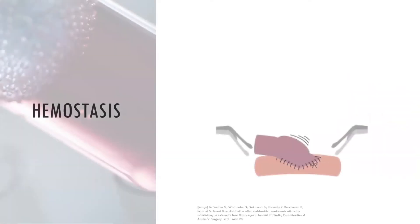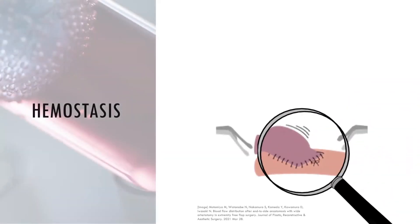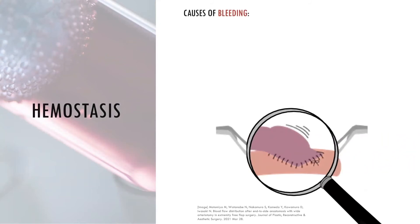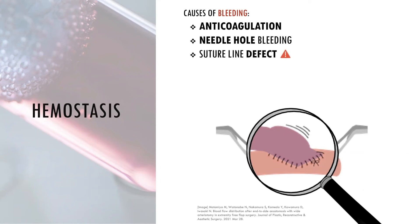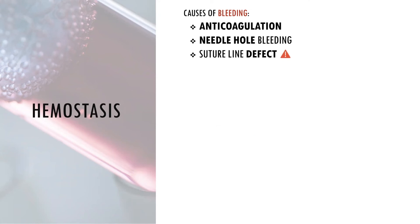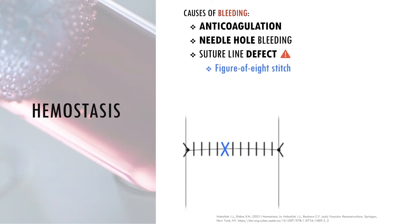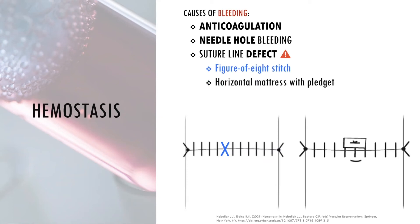For hemostasis, the suture line is checked. Generalized oozing is expected from systemic anticoagulation and improves with reversal agents like protamine. Needle-hole bleeding is common and can be controlled with topical hemostatic agents like Surgicel and gently applying pressure. Persistent vigorous bleeding indicates a defect in the suture line, which can be stopped with a figure-of-eight repair stitch. If the vessel wall is fragile, a horizontal mattress stitch with a pledgeted suture can support the repair.